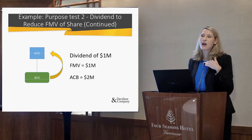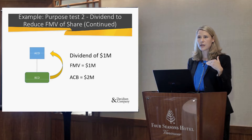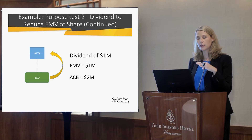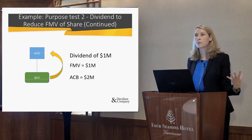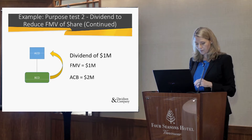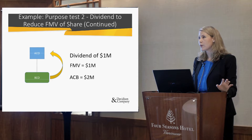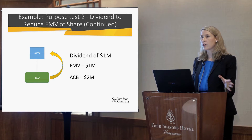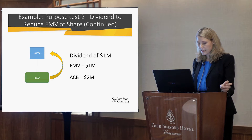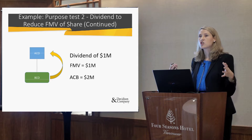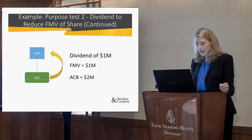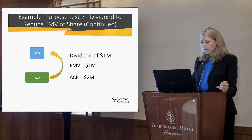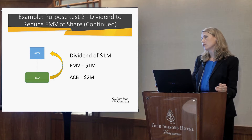But the dividend doesn't have the same adjustment to the cost base. So you still have a cost base of $2 million, but your fair market value is $1 million, because that's all Company B is worth now. The CRA really did not like this — suddenly you've got cost base but you don't actually have any corresponding value, especially if it's part of a series of transactions. The old 55(2) rules would not necessarily have applied here.